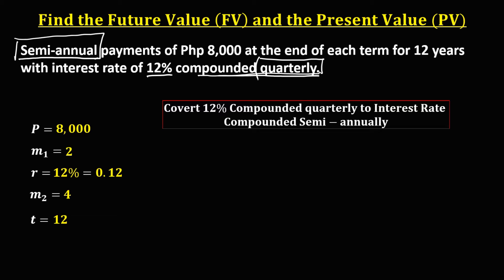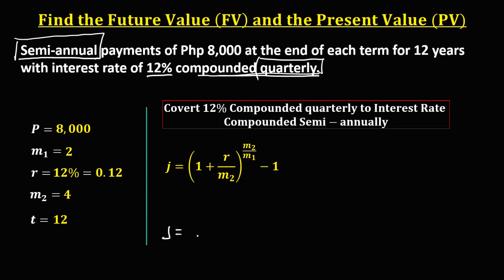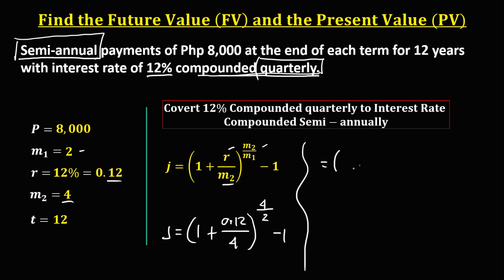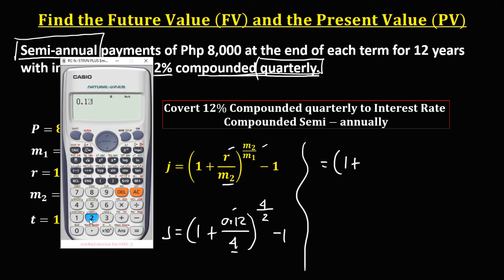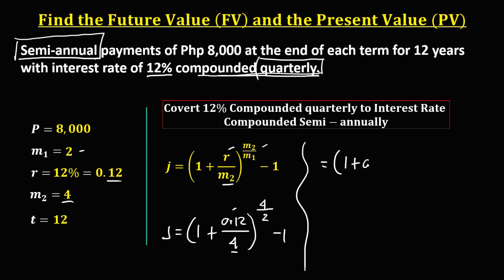Since this is a general annuity, we need to convert 12% compounded quarterly to an equivalent interest rate compounded semi-annually. Using the conversion formula, we substitute: J equals (1 plus 0.12 over M2, where M2 is 4) to the power of M2 over M1 — that is, 4 over 2 — then minus 1. So we have 1 plus 0.12 divided by 4, which equals 0.03, then to the power of 2, minus 1.